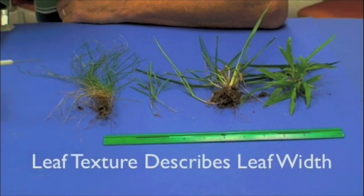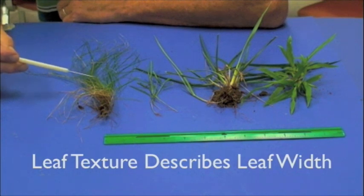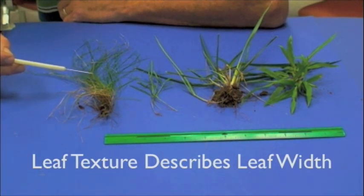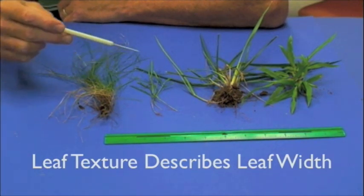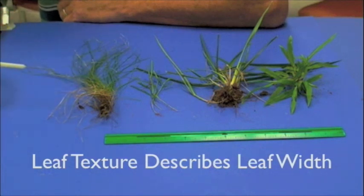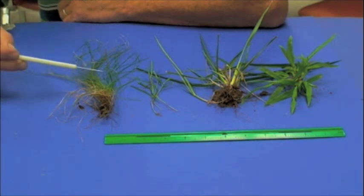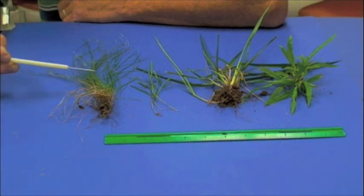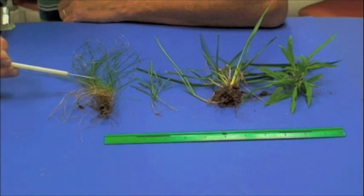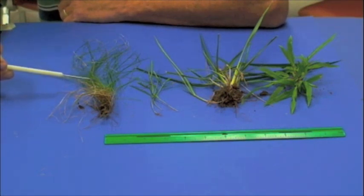Today we're looking at leaf texture, which is defined as the width of the leaf blade. Four different grass samples have been provided to illustrate leaf texture. As we go out and try to identify grasses, walking across a property, we can look at leaf texture — this deals with the width of the leaf blade. Different grasses have different types of leaf texture.